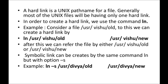When you create a file, how many paths will be generated for the file? Only one path name will be generated for a file initially. Most files will be having only one hard link. Now, how are we going to create a hard link in UNIX? In order to create a hard link, we can use the command 'ln'.